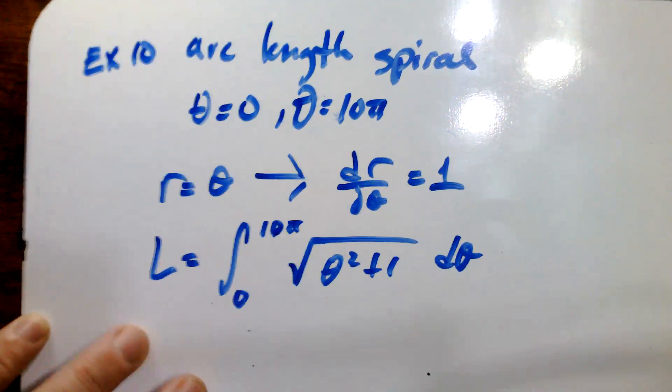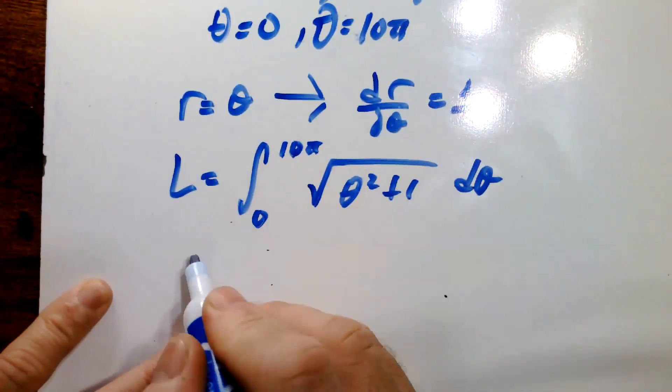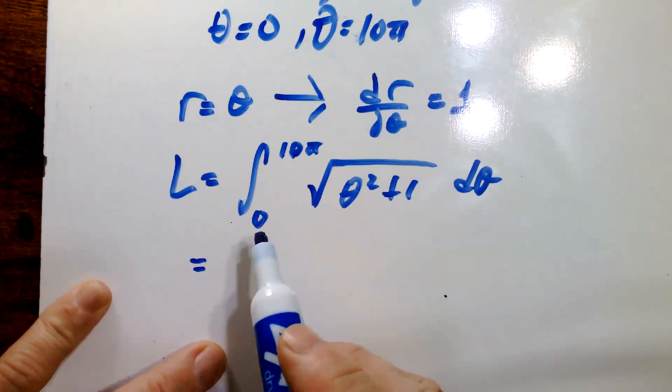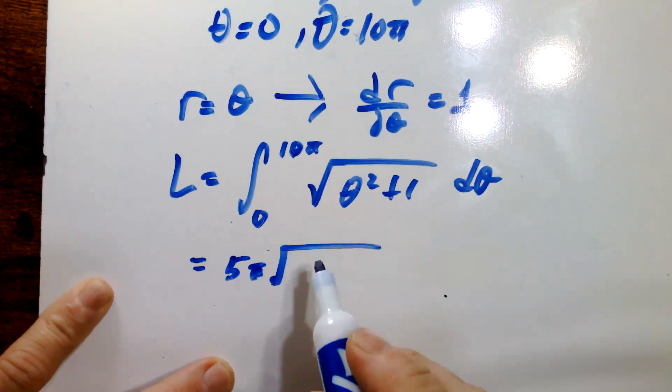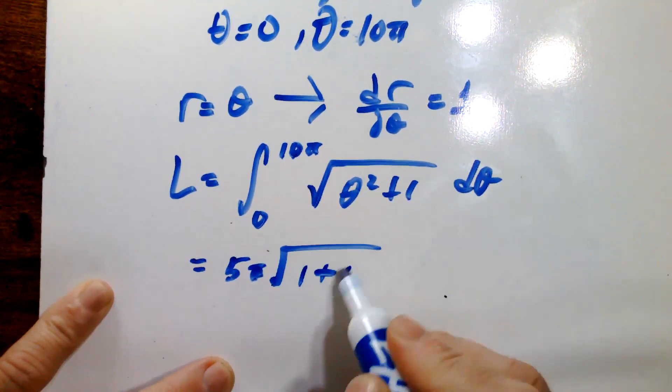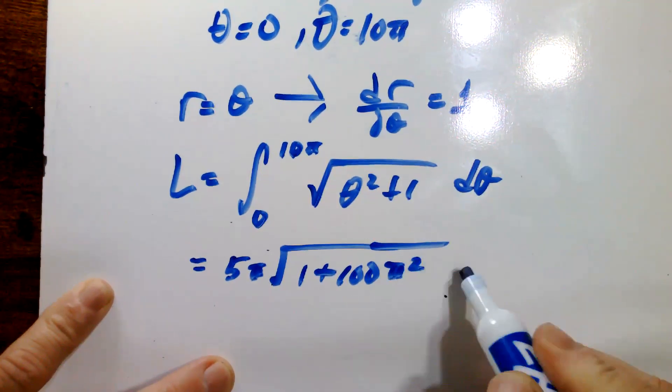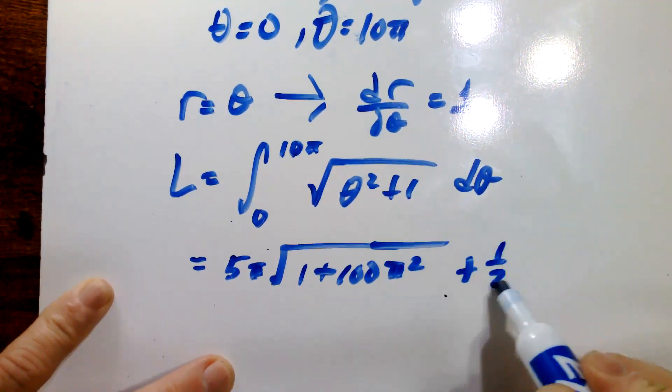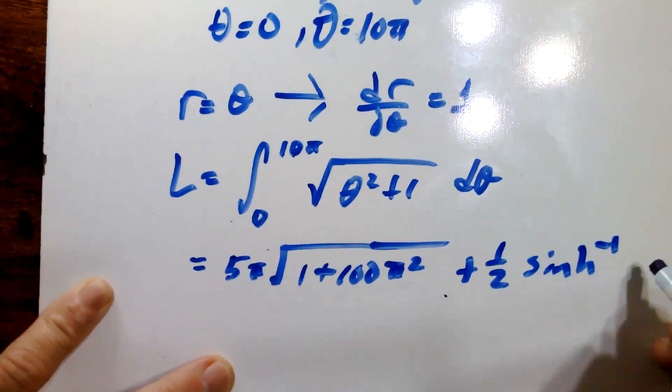If you plug this value into GeoGebra, what it's going to give you is a value of 5π times square root of 1 plus 100π squared plus one half of the inverse sinh of 10π.